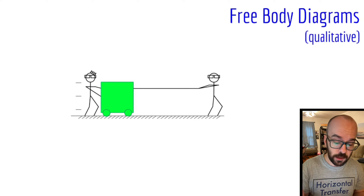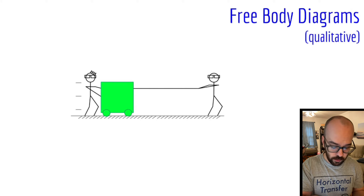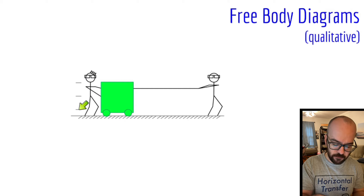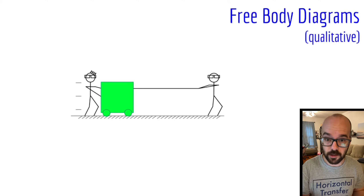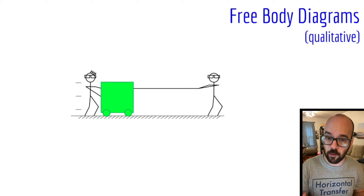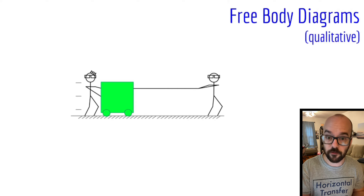In this first example we have two people who are moving some sort of cart that's on wheels. One is pulling it with a rope, one is pushing it from behind, and these three lines on the left show that the cart is moving to the right. Whenever you see those lines it's to show which way the object is moving. Note that the cart is in green — they highlight stuff in green to show what object we're actually drawing the forces for.